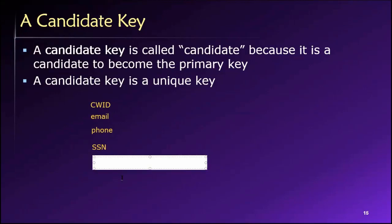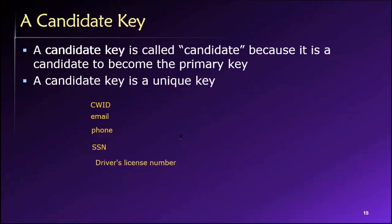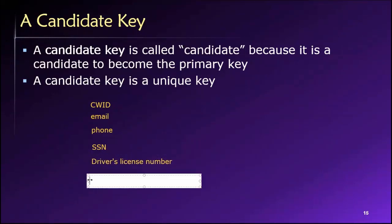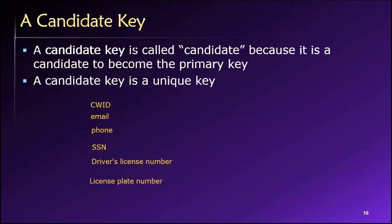Other possibilities: a driver's license number could possibly be used — every one of those is unique. And there are license plates: if you drive, you'll have a license plate number on your car that will be unique from everybody else's. We could go on and on coming up with more and more possible identifiers.